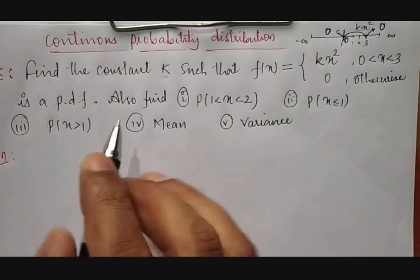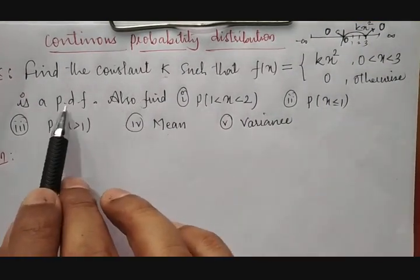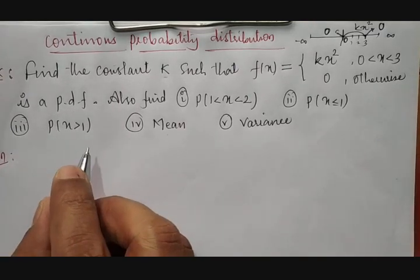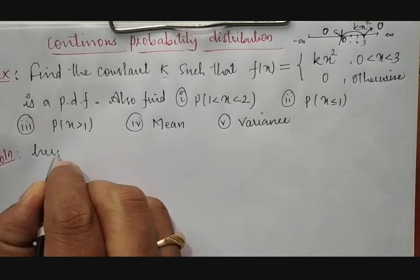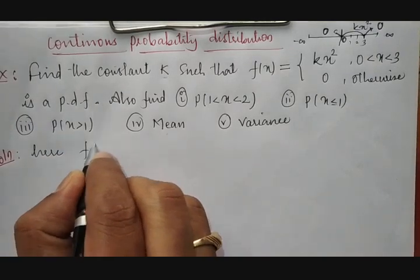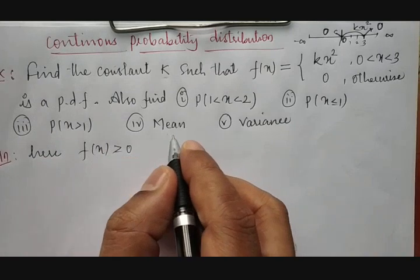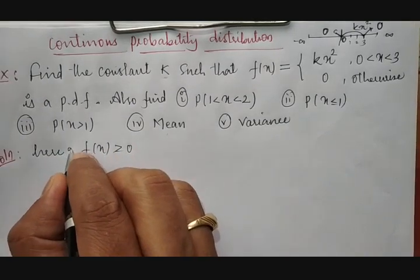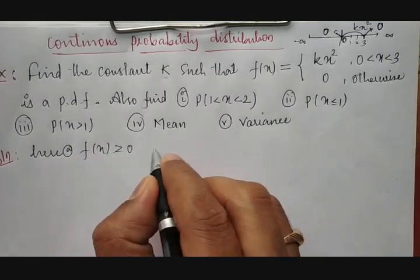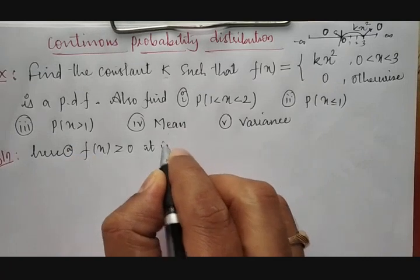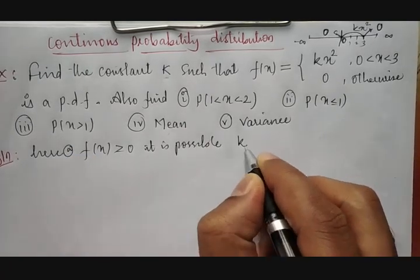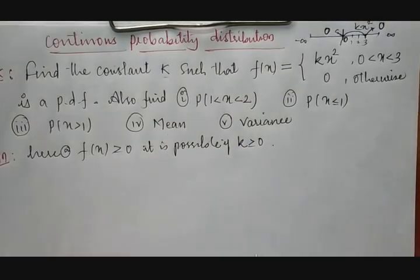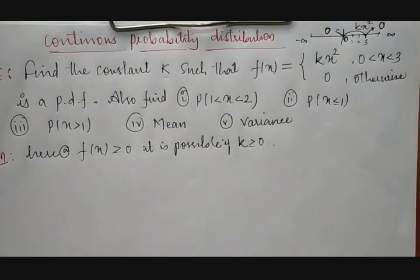To say it is a continuous probability density function, it must satisfy two conditions. First, f(x) must be greater than or equal to 0. This is possible only when k is greater than or equal to 0, so we assume k ≥ 0.